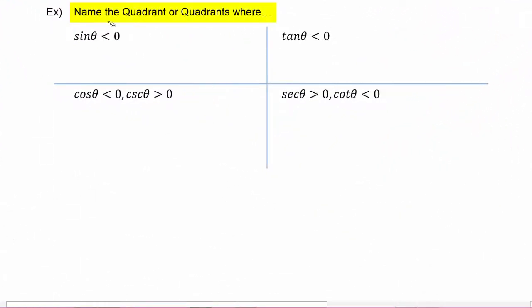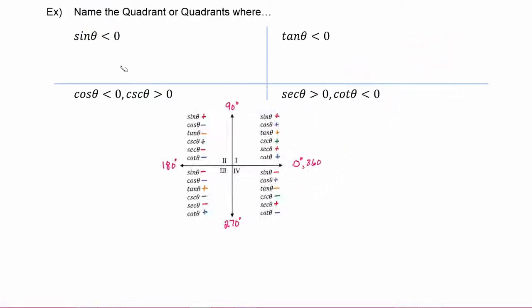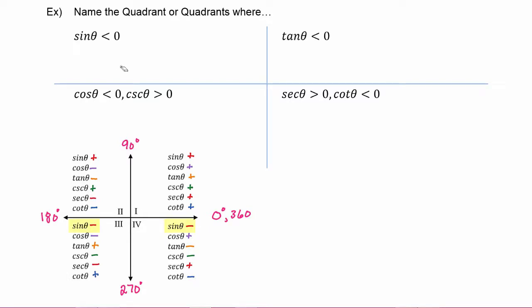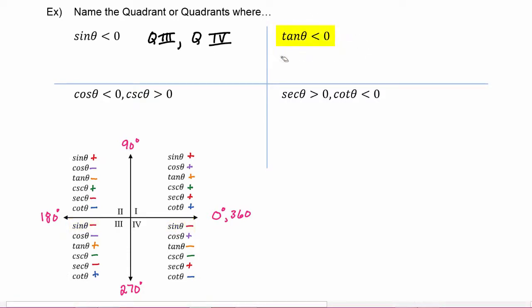In the next examples, we want to name the quadrant or quadrants where the given signs of the trig functions are true. The first one requires that sine theta is negative. Looking at our chart, sine theta is negative in quadrant three and in quadrant four. Next, tangent theta is negative whenever x and y have different signs, which happens in quadrant two and quadrant four.